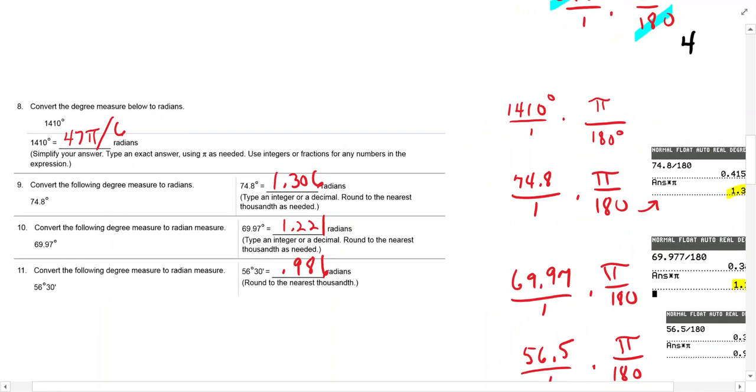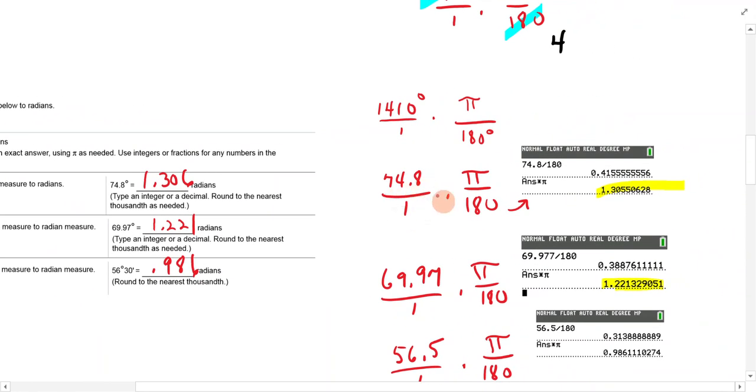Let's get down to the decimal ones. So 74.8, 74.8 over 1 times pi over 180. So what you can do is just multiply this top and your pi is going to be in your answer. But 74.8 divided by 180 gets this 0.415, whatever. Then you multiply that by pi, use your pi key on your calculator, and you get the answer. It does say round to the thousandth, so that's three places. For 69.97, same thing. You're going to divide by the 180 and then multiply by pi.